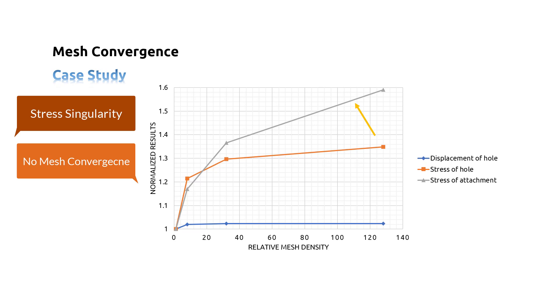This singularity occurs because of the idealizations used in the finite element model. The connection between the lug and the parent structure has been modeled as a sharp corner, and the parent structure has been modeled as rigid. These idealizations lead to the stress singularity.